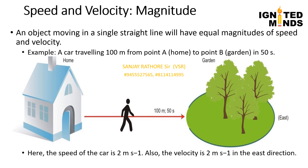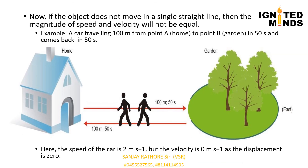Speed and velocity magnitudes: an object moving in a single straight line will have equal magnitudes of speed and velocity. For example, a car travelling 100 m from point A to point B in 50 seconds has speed = 2 m/s and velocity = 2 m/s east — they are equal. However, if the car travels 100 m from A to B and back in 50 + 50 seconds, the speed is still 2 m/s but the velocity is 0 m/s because the displacement is zero.